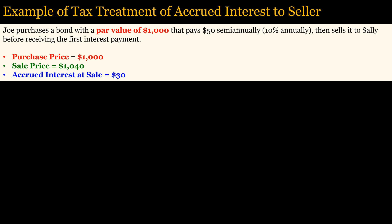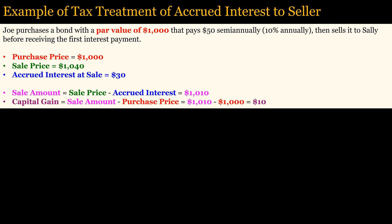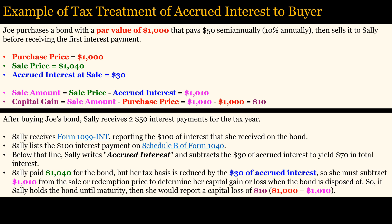This example will show how accrued interest affects taxes. Joe sells his bond to Sally. Details are shown on the screen. Joe reports interest of $30, even though he receives the interest payment as part of the sale price. Therefore, the sale amount is reduced by the amount of the accrued interest, leaving it a capital gain of $10. Sally paid $1,040 for the bond, but her tax basis is reduced by the $30 of accrued interest. So she must subtract $1,010 from the sale or redemption price to determine her capital gain or loss when the bond is disposed of. So, if Sally holds the bond until maturity, then she would report a capital loss of $10.